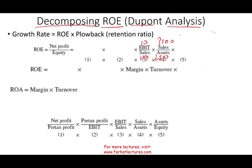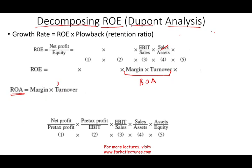These two ratios — margin and asset turnover — together give us ROA, return on assets. If we eliminate sales, what we are left with is EBIT divided by assets, which is return on asset. ROA is an important component of ROE, and I will explain the relationship between the two, which is important in the business world.